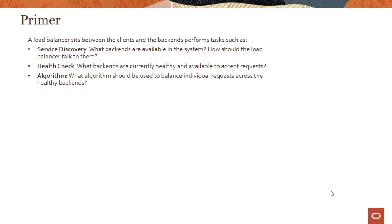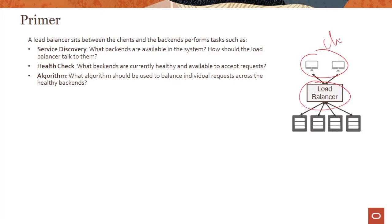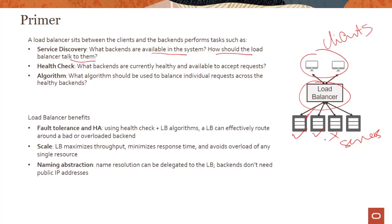Before we get into the OCI load balancing service, let's look at a quick primer on what a load balancer is. As shown on the slide, a load balancer sits between the clients and the backend and performs tasks such as service discovery, health checks, and decides what algorithms to use to balance requests across the healthy backends. The load balancer figures out what backends are available, how to talk to them, and does health checks to make sure servers are running — if a server is not running, it takes it out of rotation.